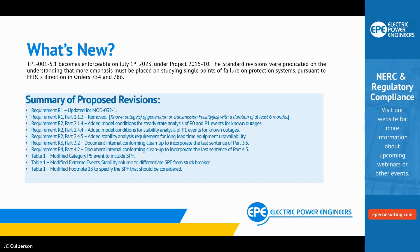So what's new? Let's talk about the changes. Requirement 1 — they removed the language for MOD 10 and 12 and replaced it with MOD 32, since MOD 32 became effective when MODs 10 and 12 became ineffective. Requirement 1.1.2 was removed altogether. Requirements 2.2.4, 2.4.4, and 2.4.5 all have added verbiage. Requirements 3 and 4 also had some changes, and in the table there are changes specifically for the P5 category.